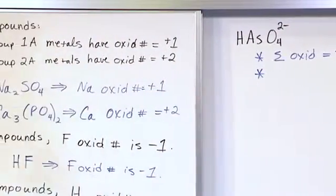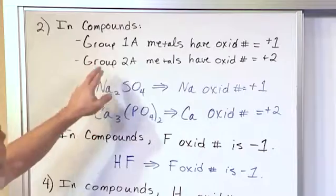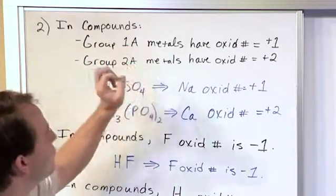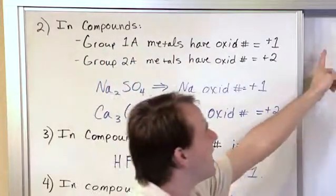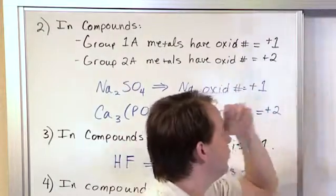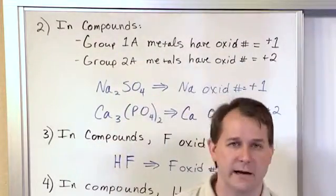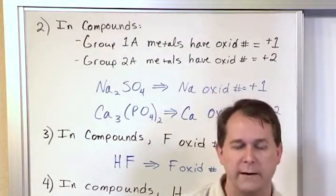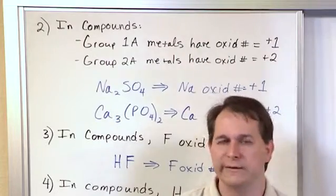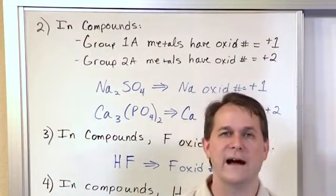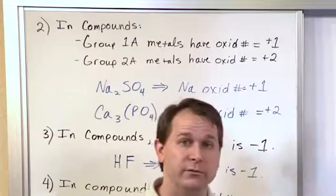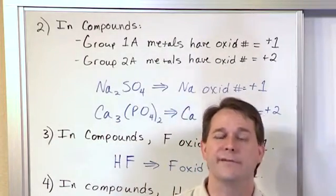Now we go down our list in priority order and figure out first, do we have any group one or group two metals? Well here we have hydrogen, arsenic and oxygen so you don't count hydrogen as a metal. Even though it's in the group one, it's still not really considered a metal.